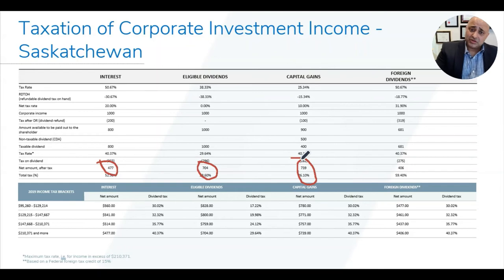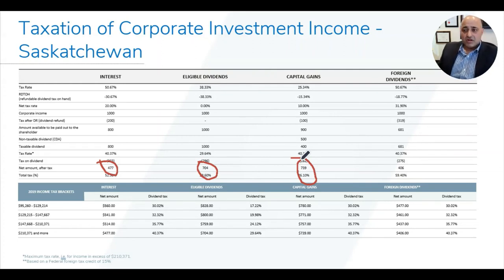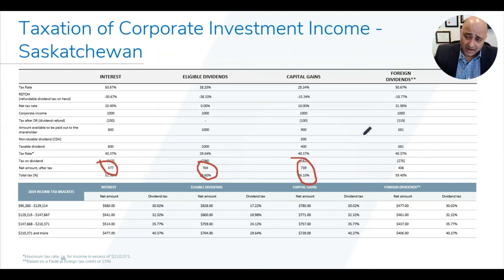So the net on a $1,000 capital gain reaching your pocket is $739, which is better than the eligible dividend outcome. The fourth form of income is foreign dividends — dividends received from non-Canadian firms like Microsoft, Apple, or American banks. Foreign dividends are taxed at 50.67 percent with an RDTOH credit of only 18.77 percent. On $1,000 you pay $319 in corporate tax, leaving $681 for the shareholder. When that $1,000 foreign dividend reaches your pocket, it will be $406.